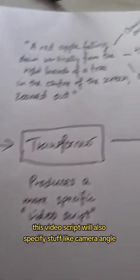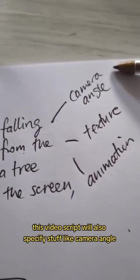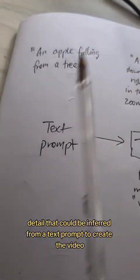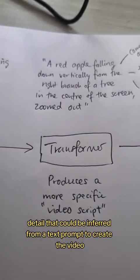This video script will also specify stuff like camera angle, texture, animations—basically any other detail that could be inferred from a text prompt to create the video.